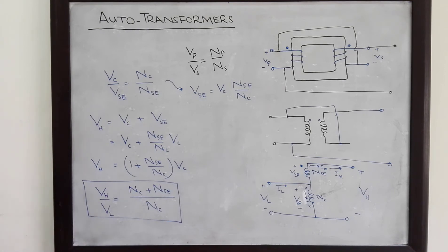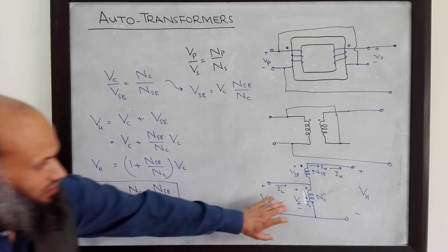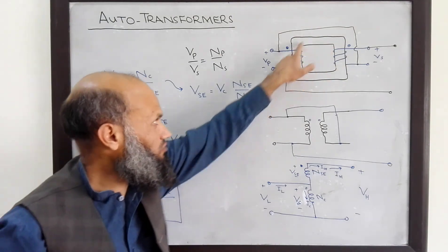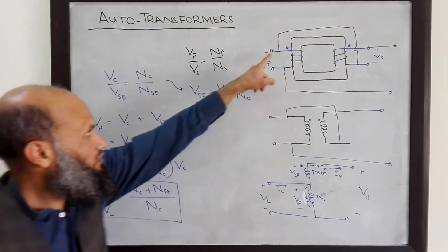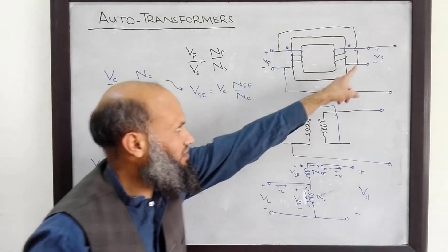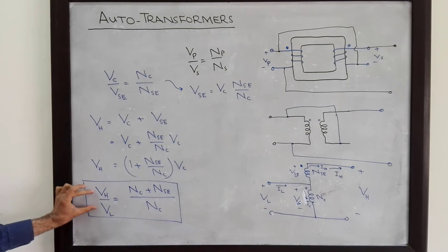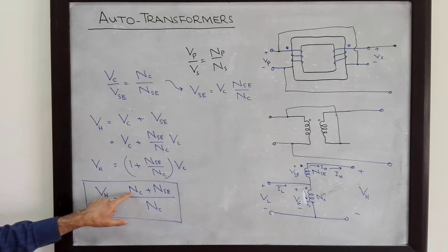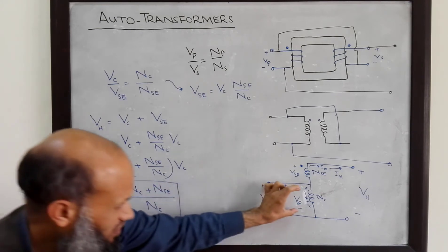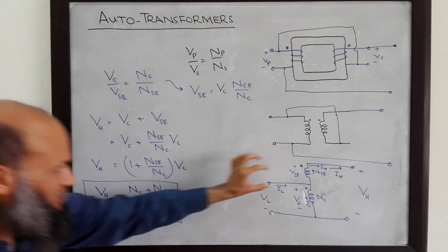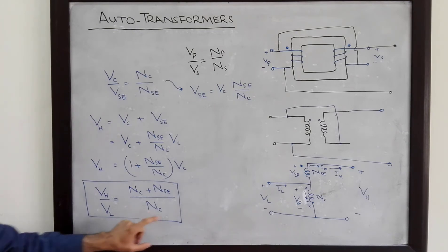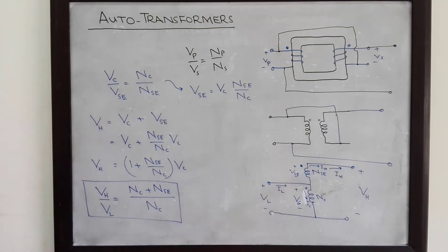In the case of the autotransformer, where the two windings are not only magnetically coupled but there is also an electrical connection, the voltage VH is related to VL by this relation: VH equals the number of turns on the common winding plus the number of turns on the series winding, divided by the number of turns on the common winding.